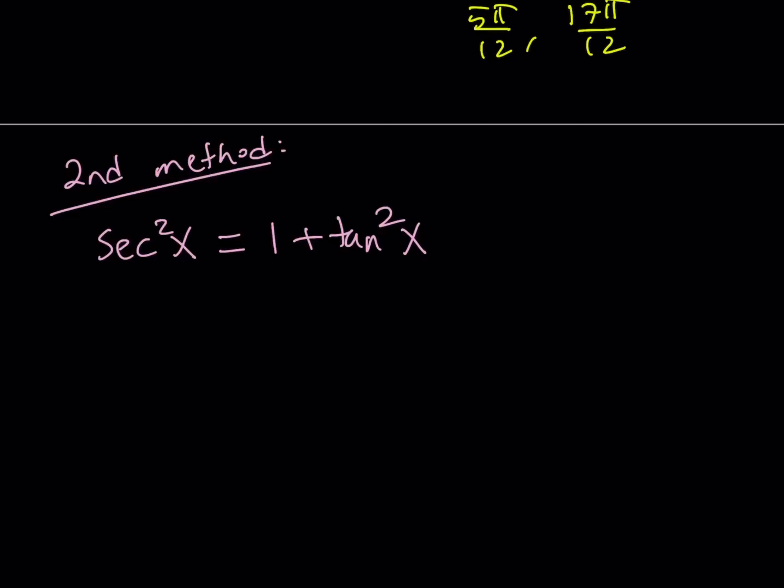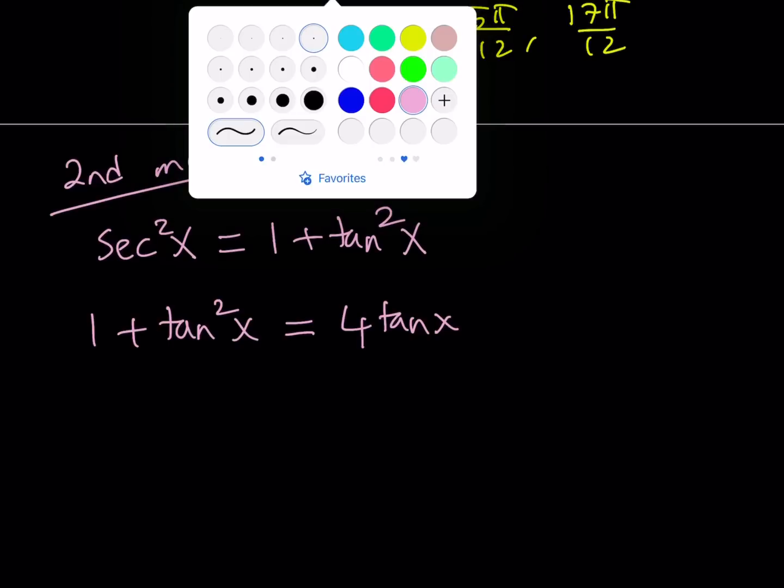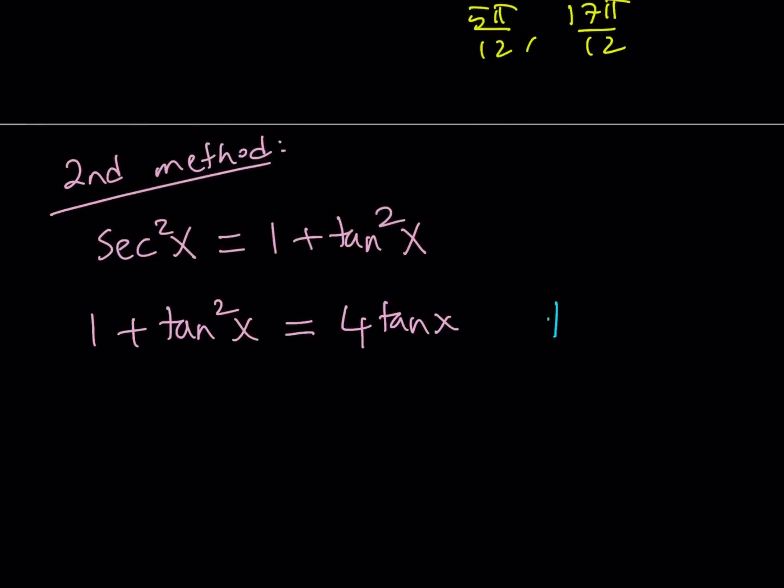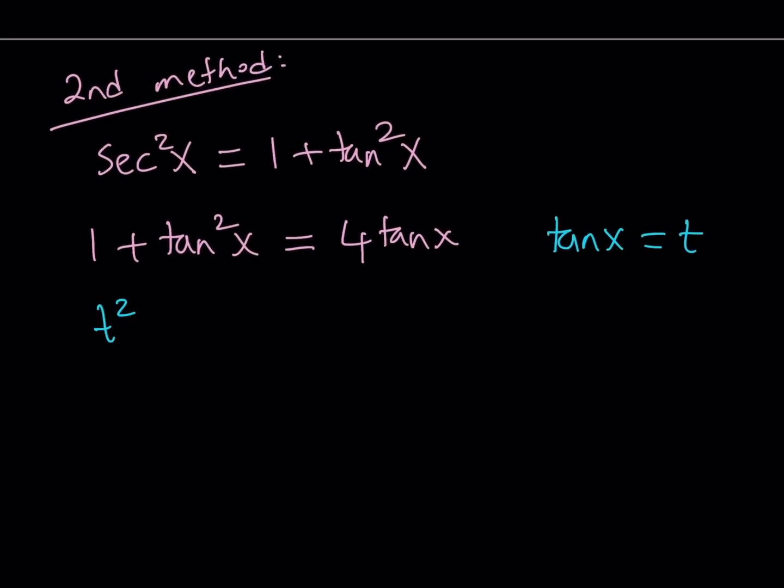So here's what I'm going to do. I'm going to replace secant squared with 1 plus tangent squared in my original equation. And my original equation is, remember, secant squared equals 4 times tangent. So if I do make the replacement, I get the following. 1 plus tangent squared equals 4 times tangent x. Now, the cool thing about this equation is it is quadratic in tangent x. So if I make my substitution, my favorite method, let's call tangent x T, which makes sense, right?